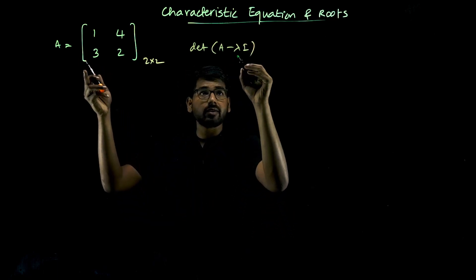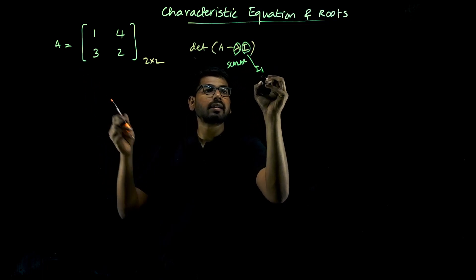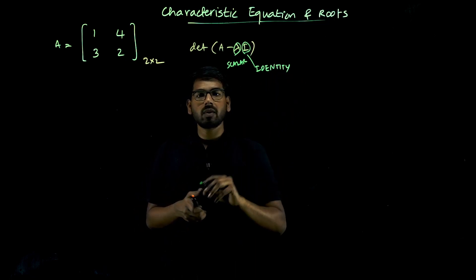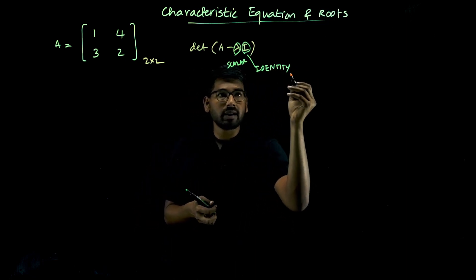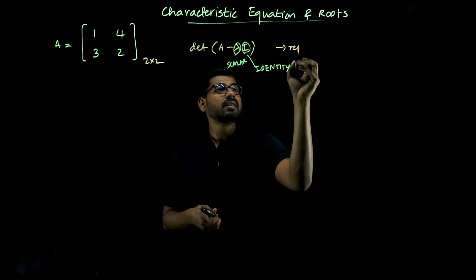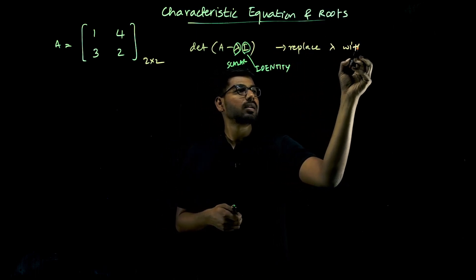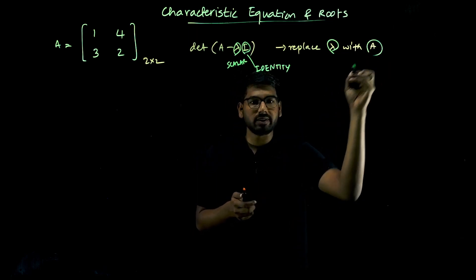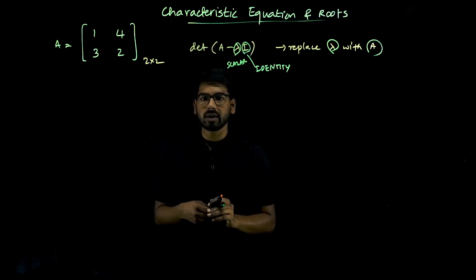You know how to find a determinant. Lambda is a scalar and I is an identity matrix. The determinant of A minus lambda I — you can replace lambda with A. This is the official version, this is the technical version of how to find the characteristic equation. But there is a shortcut.